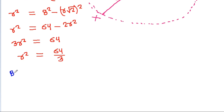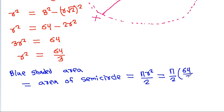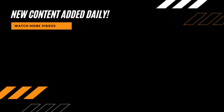The blue shaded area equals the area of the semicircle = πR²/2 = (π/2) × (64/3) = 32π/3. Thank you.